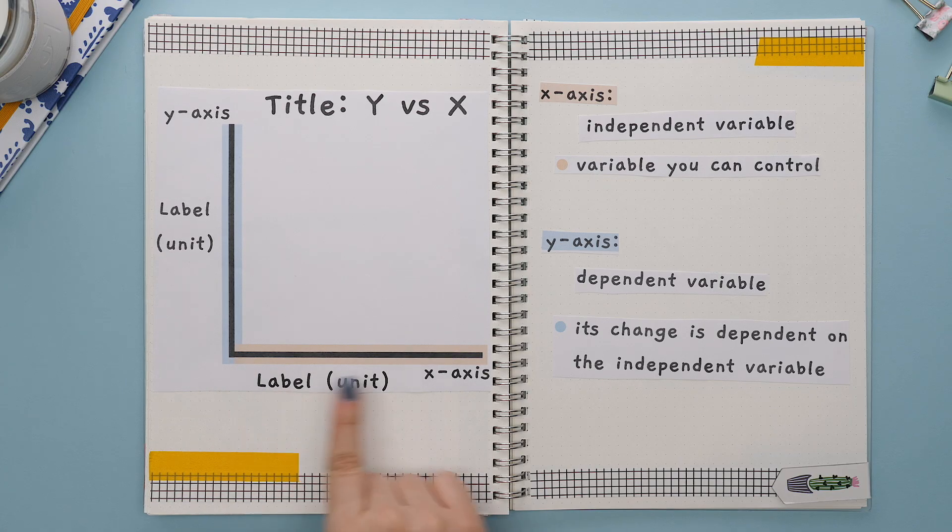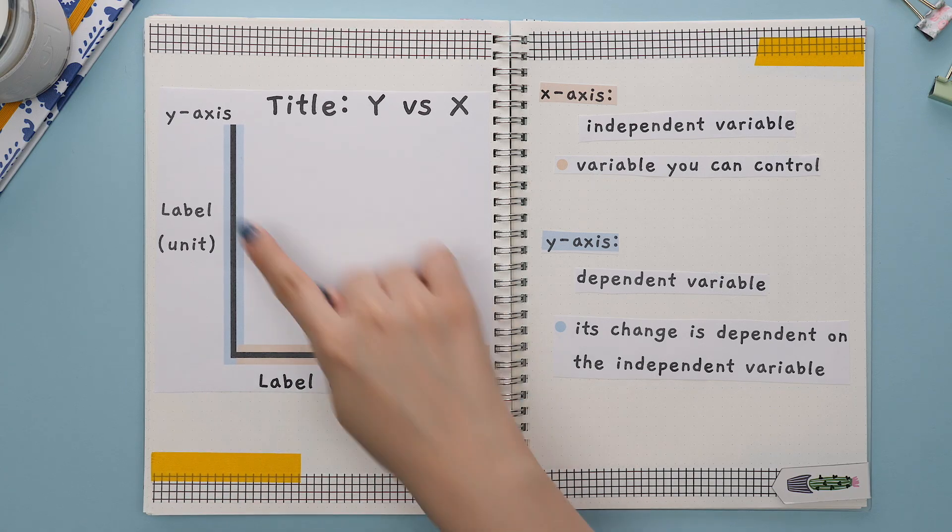There are two axes: the x-axis, which is horizontal, and the y-axis, which is vertical.